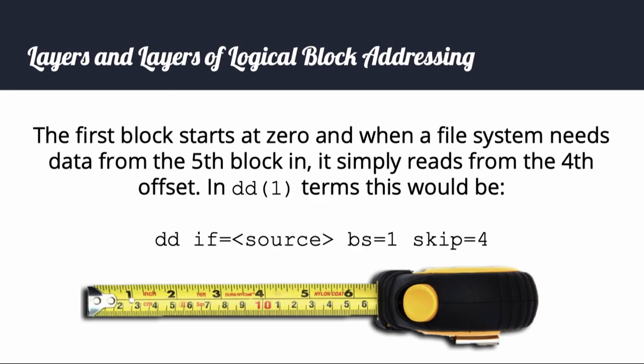In the tape measure example, you skip 4 inches to address the 5th inch. The dd command works this way with the skip property, and note that dd does not know or care if the underlying block storage device is a spinning disk, a SATA SSD, an NVMe device, a file, a partition, or a memory-backed disk.